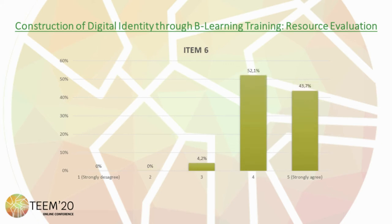In the sixth item, which rates whether the range of resources has made learning easier, 43.7% of the students strongly agree, 52.1% agree, and 4.2% disagree.